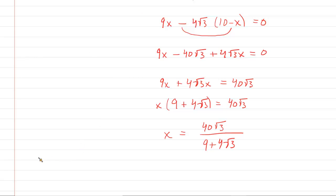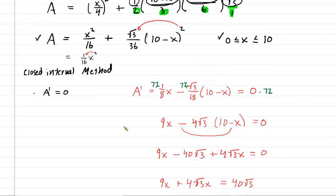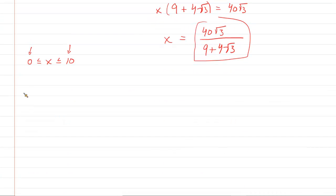So now what do we do in the closed interval method? Well, we have to look at the endpoints. Recall that x was bounded by 0 and 10. So we're going to look at both the endpoints, the lower and the upper. We also have to look at this critical number. And what do we do with all these things? Well, we plug them into the area equation. That's how the closed interval method works. So what we're going to have to do, unfortunately perhaps, is take this area equation, and we're going to plug in the endpoints as well as the critical number.